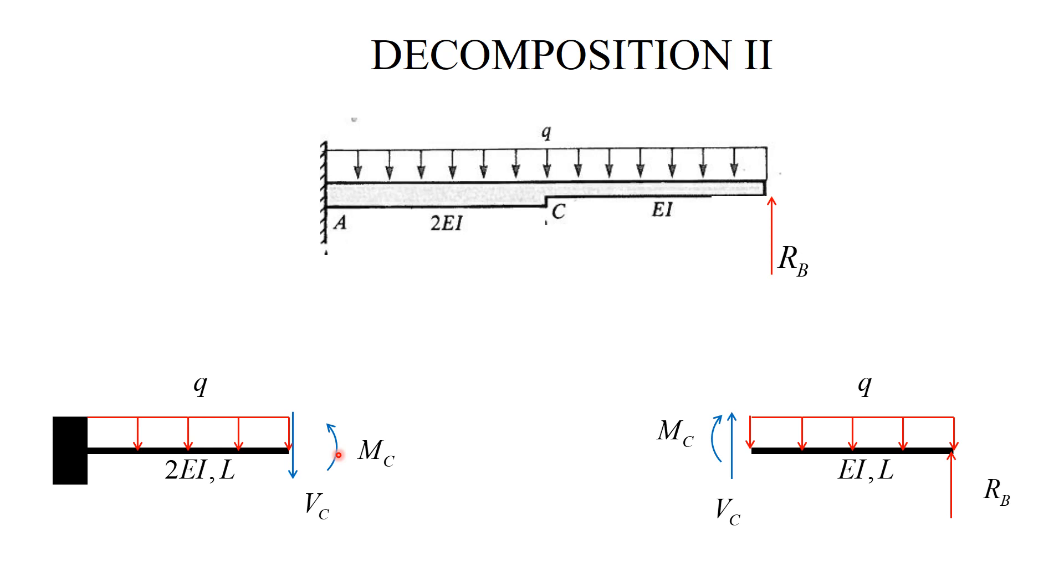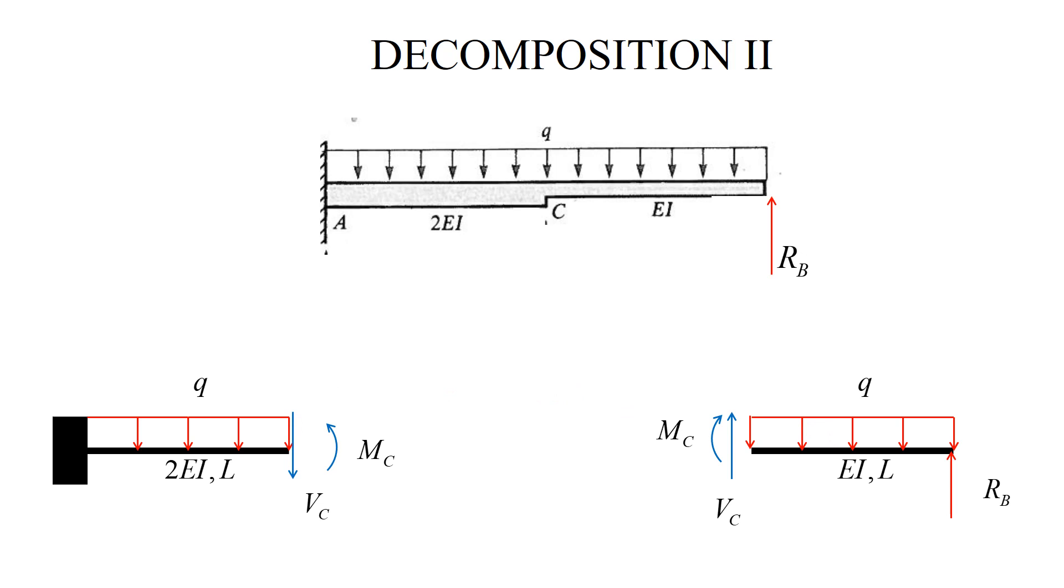At this point, I would like to have a strategy how we deal with these two beams. Here is a multi-step strategy. It begins with analyzing the free-body diagram for the right beam. It will give me the values of V_C and M_C in terms of Q and R_B. Then, I will apply these forces to the left beam.